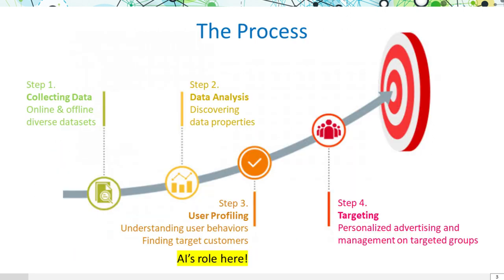In financial precision marketing, we start by collecting varied data, then analyze it to understand patterns. AI becomes crucial in user profiling, helping identify target customers. Finally, we engage these targets with personalized advertising.